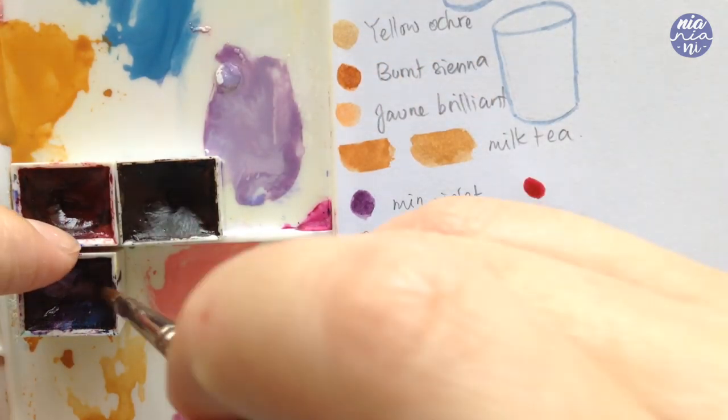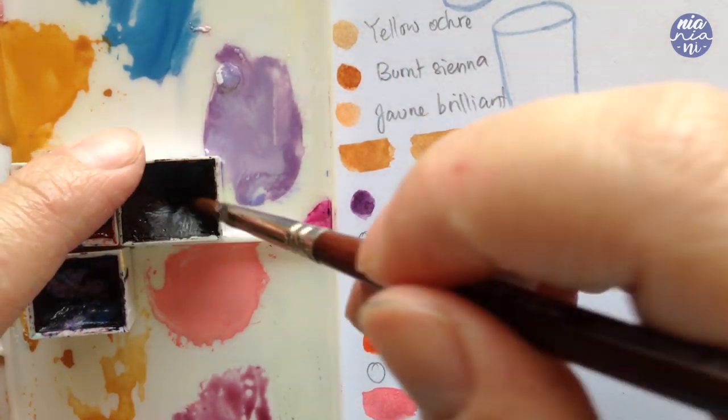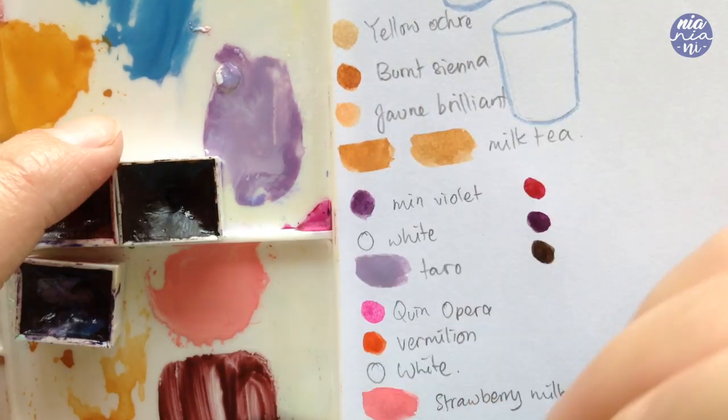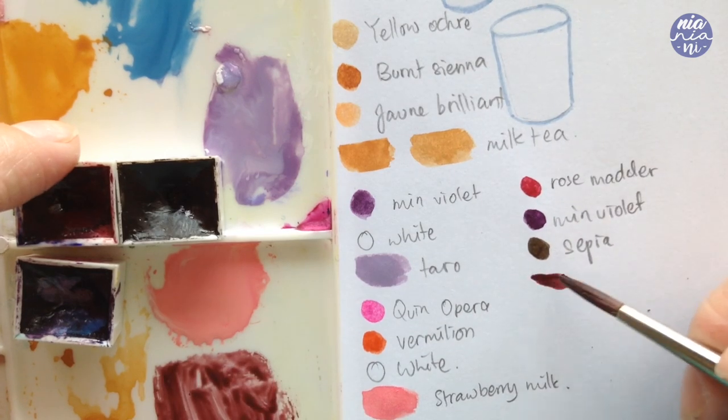For the sago, I used a mix of rose madder, mineral violet and sepia to create a dark brown burgundy color, just to give it a little bit of hue so it doesn't look too flat.